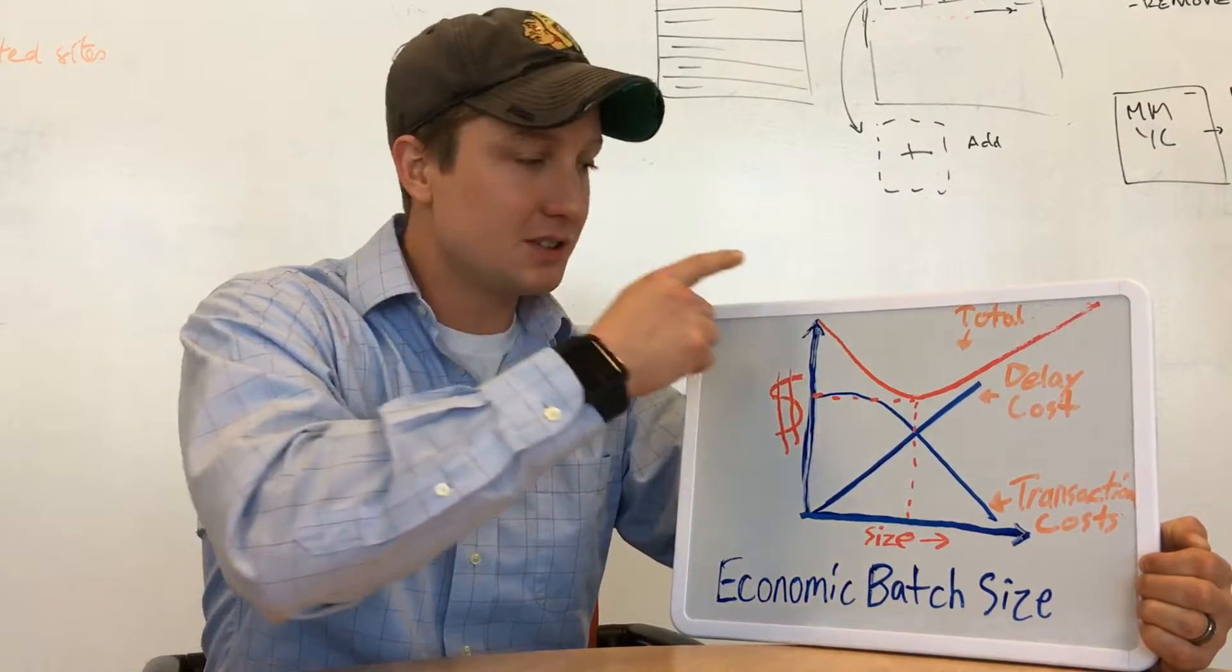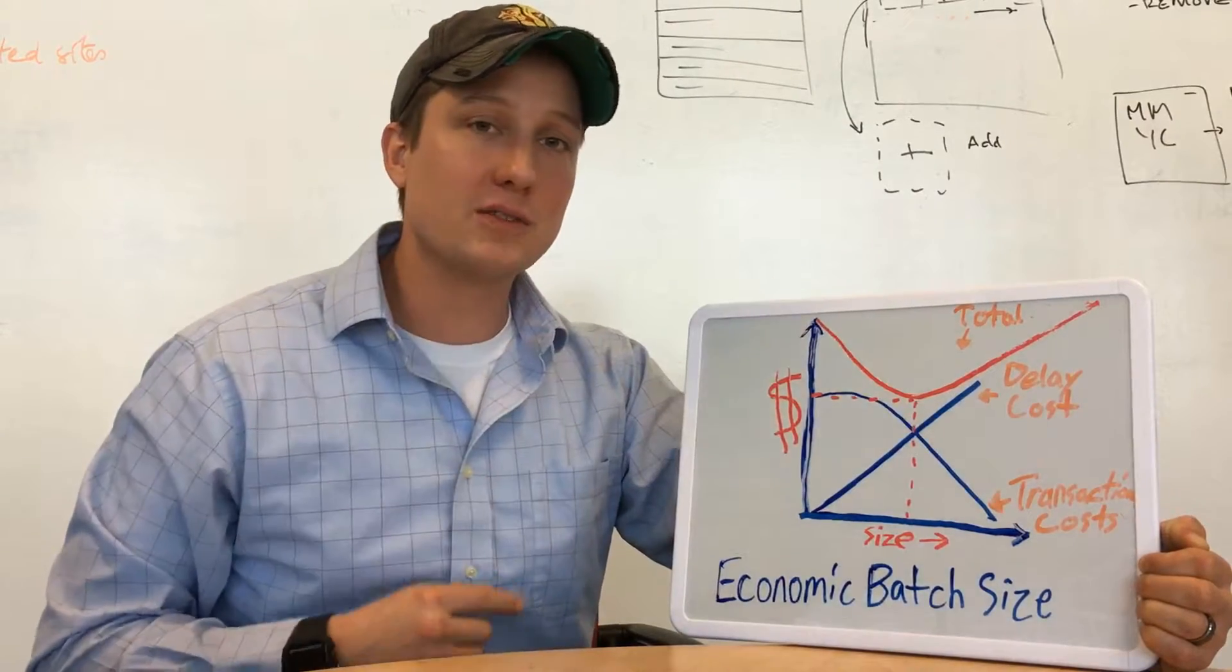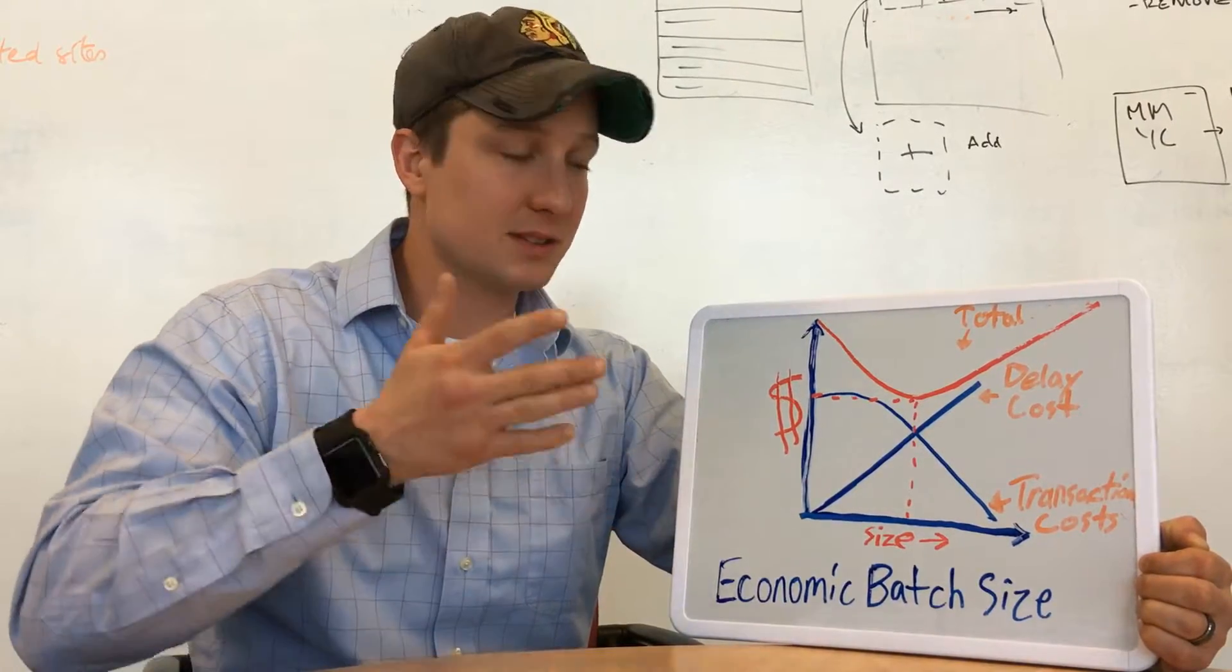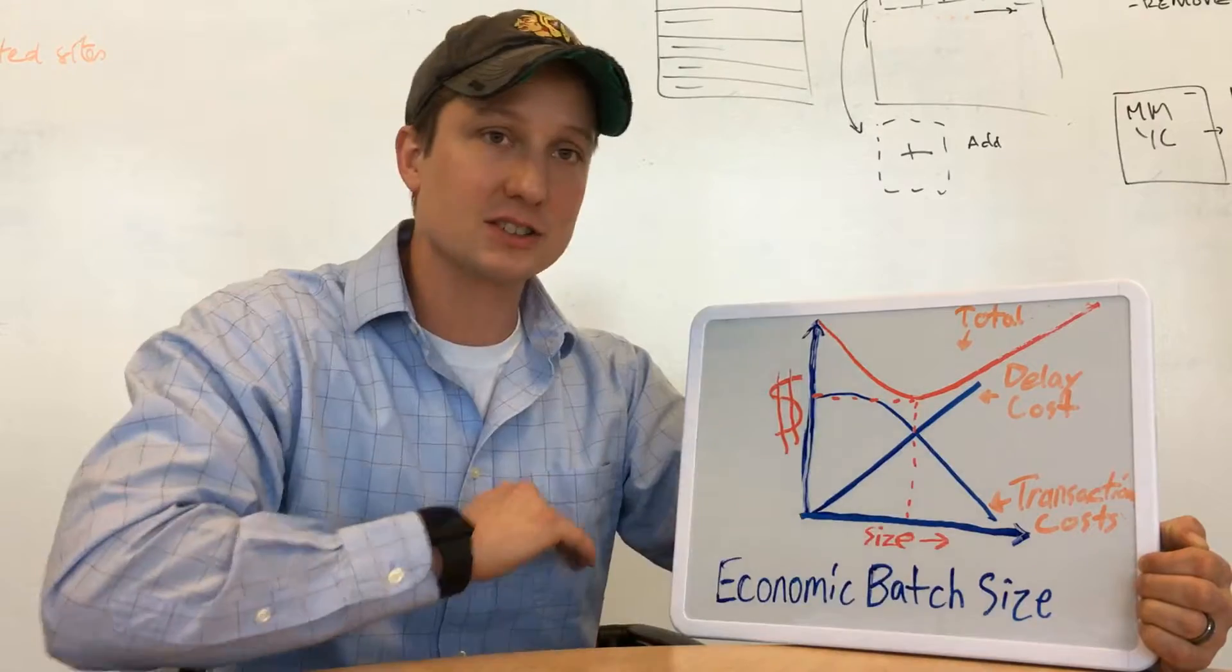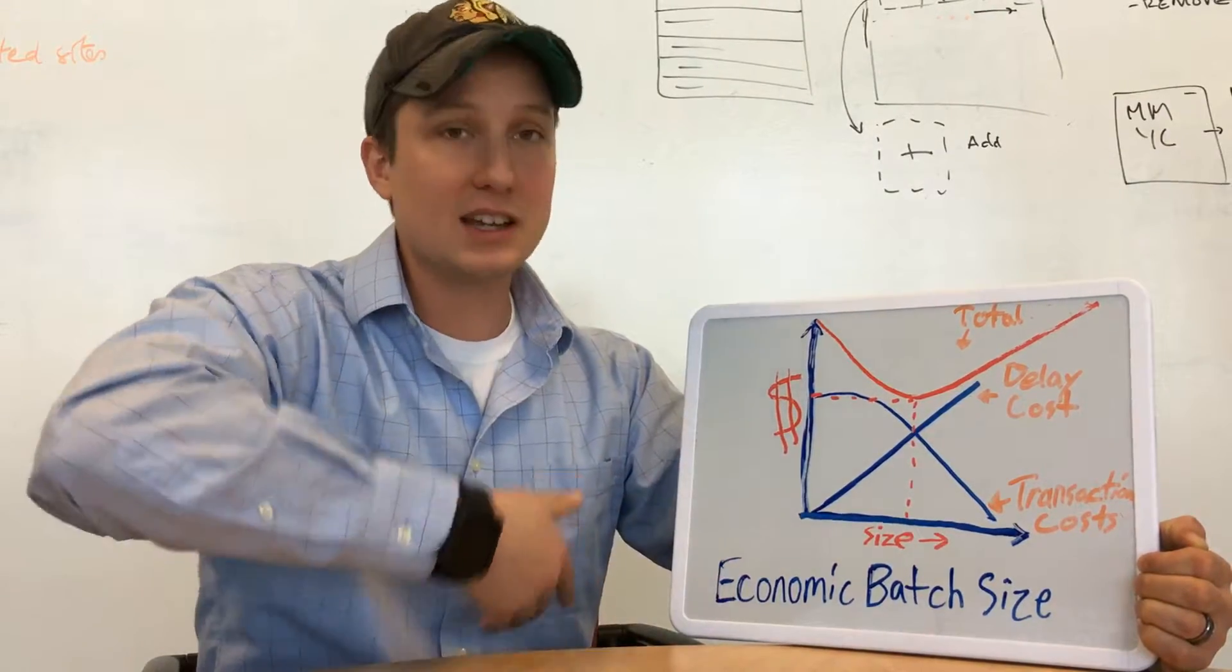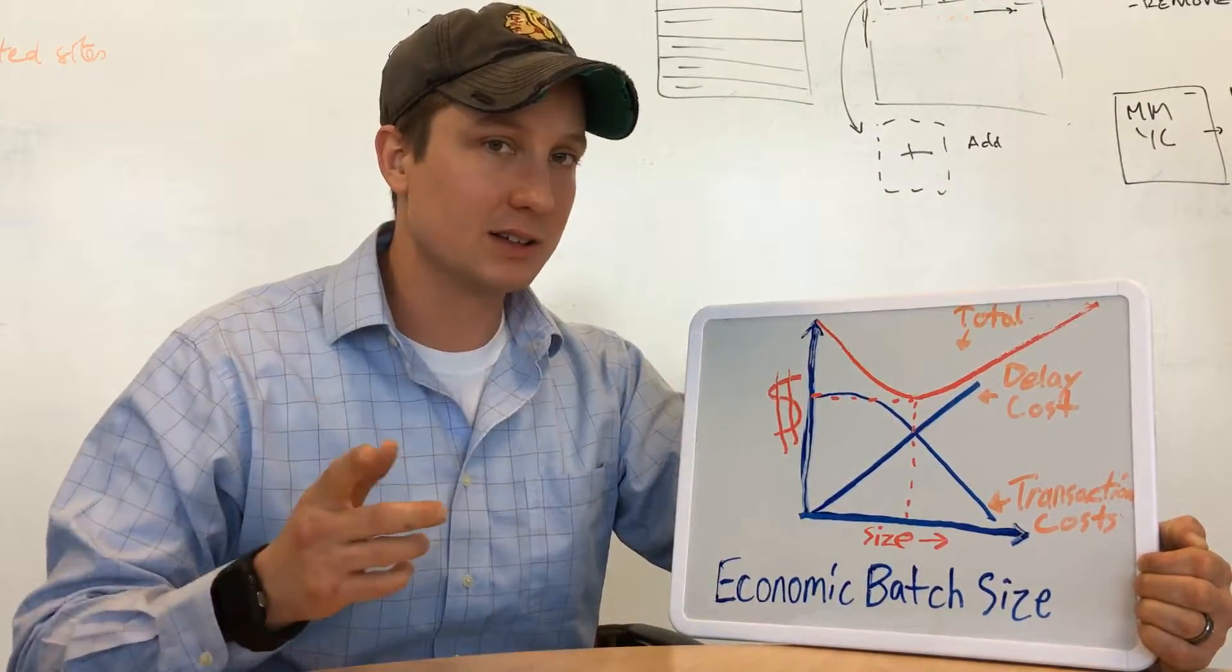Now, in between the two, you can see there's a U-curve optimization because economies of scale, when it comes to transactions, causes things to fall while delay costs tend to rise linearly.